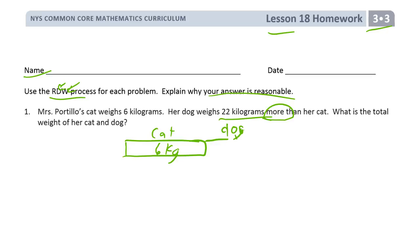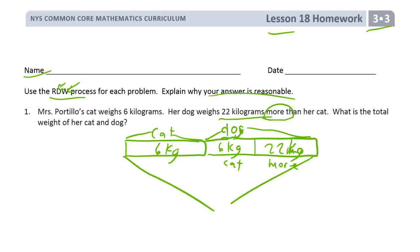Now sometimes you can do these in a math picture, and it's a little bit easier than a tape diagram. So I'm going to give you an example of both. We have the dog is going to be longer than the cat. We know the dog is going to be, that's the cat. The dog is the same as the cat and 22 more. It's the cat plus 22 more. What we want to find out is this whole thing all together. So that's 6 plus 6 plus 22.